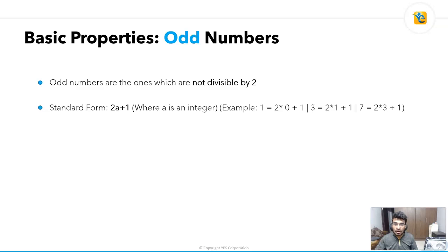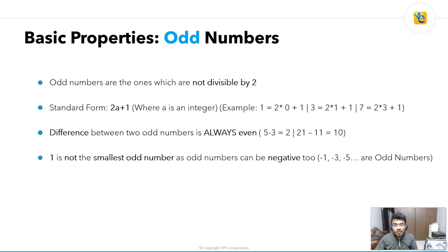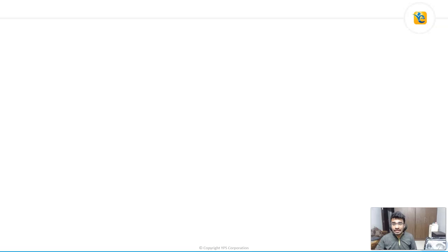The difference between two odd numbers is a common faltering point. Many students think the difference can be odd — but that's not the case. For example, 5 minus 3 equals 2, and 21 minus 11 equals 10. The difference between two odd numbers is always even. Also, 1 is not the smallest odd number — odd numbers can be negative too: minus 1, minus 3, minus 5, minus 7 are all odd.